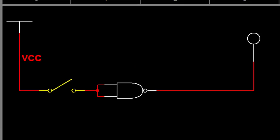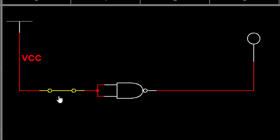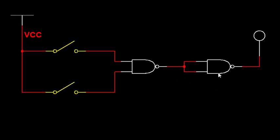Now let us check the working of NAND as a universal gate. First, NAND as NOT: the inputs are shorted so we only have one input. Input 0 gives output 1; when input is 1, output becomes 0. So the NAND gate is working as a NOT gate.